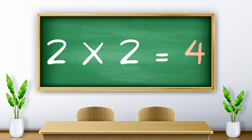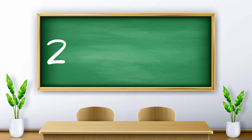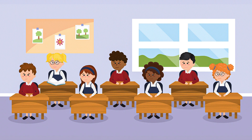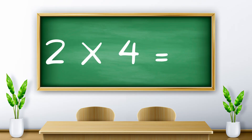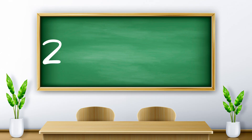Two ones are two. Two twos are four. Two threes are six. Two fours are eight.